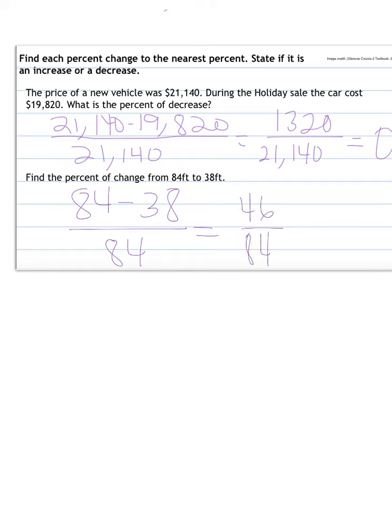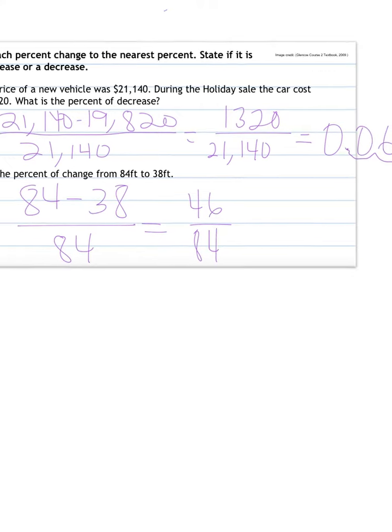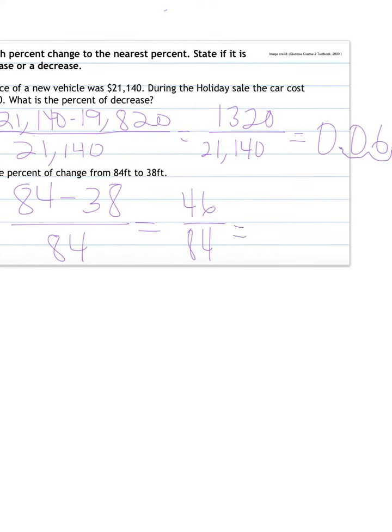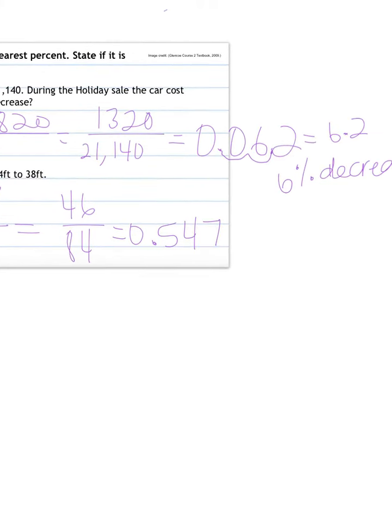84 minus 38 is 46, over 84, divide that out, and you get 0.547. Turn it into a percent by moving the decimal one, two spots over. You get 54.7. Now round to the nearest percent, that's the spot in front of the decimal. Look to the one after. Seven makes it round up, so it would be 55%, and it's getting smaller, so it's a decrease.